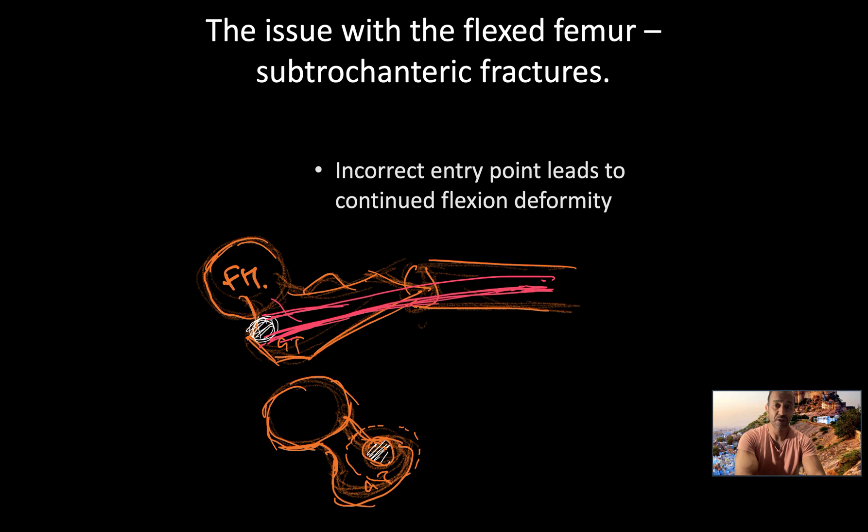Here's another little pointer. When you've got subtrochanteric fractures, often they do line up against the nail, and you don't always have to open. I try closed reduction techniques first, but the most, the key is getting the entry point right. Often, because it's flexed and apex anterior, you end up with a more anterior nail entry point, and therefore you've just fixed the deformity.